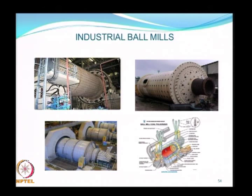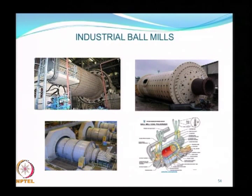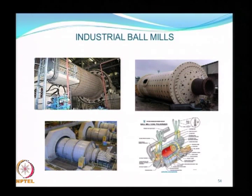Industrial ball mills are huge chambers used to make thousands of tons of material on a weekly basis. It is difficult to think of these machines in the context of nanotechnology where production rates are much more modest. Many of these industrial ball mills do not lend themselves to making nanoparticles.